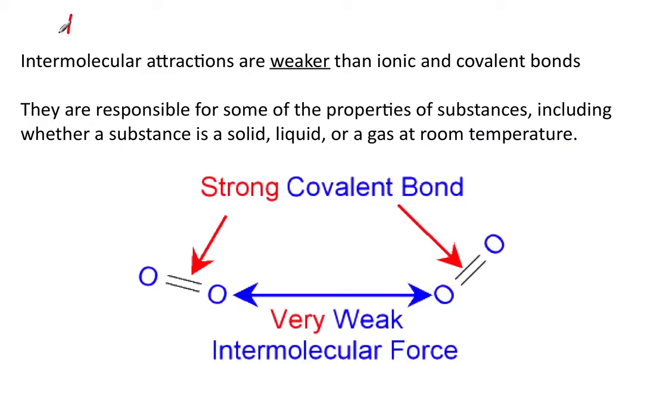Now something you should know: we've got ionic, which are the strongest types of bonds. We've got covalent, which are not as strong as ionic, but they still hold molecules together. And then we've got intermolecular attractions, which are weaker than both ionic and covalent. You can think of them as bonds, but they're certainly not as strong as ionic or covalent. They are responsible for lots of properties, and it'll tell us whether it's a solid, liquid, or gas at room temperature. It'll give us information about boiling point and melting point.